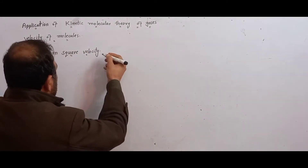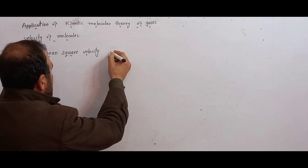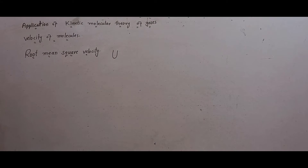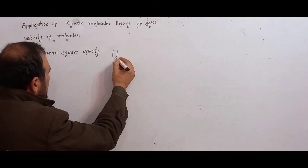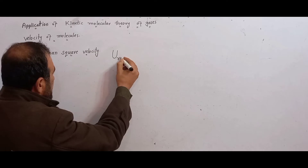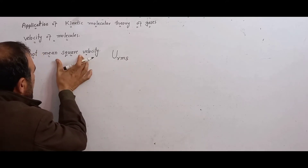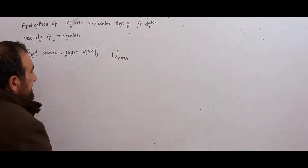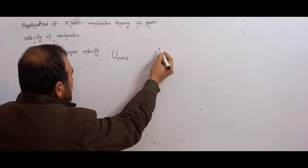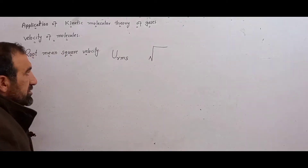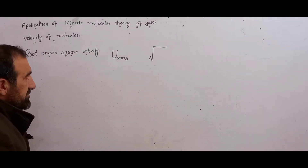Root mean square velocity is the velocity we will study here. The symbol used for velocity in this topic is u. For root, we write 'r'; for mean, we write 'm'; for square, we write 's'. Root mean square velocity is denoted by u_rms. The definition: the square root — square root of mean square velocity.